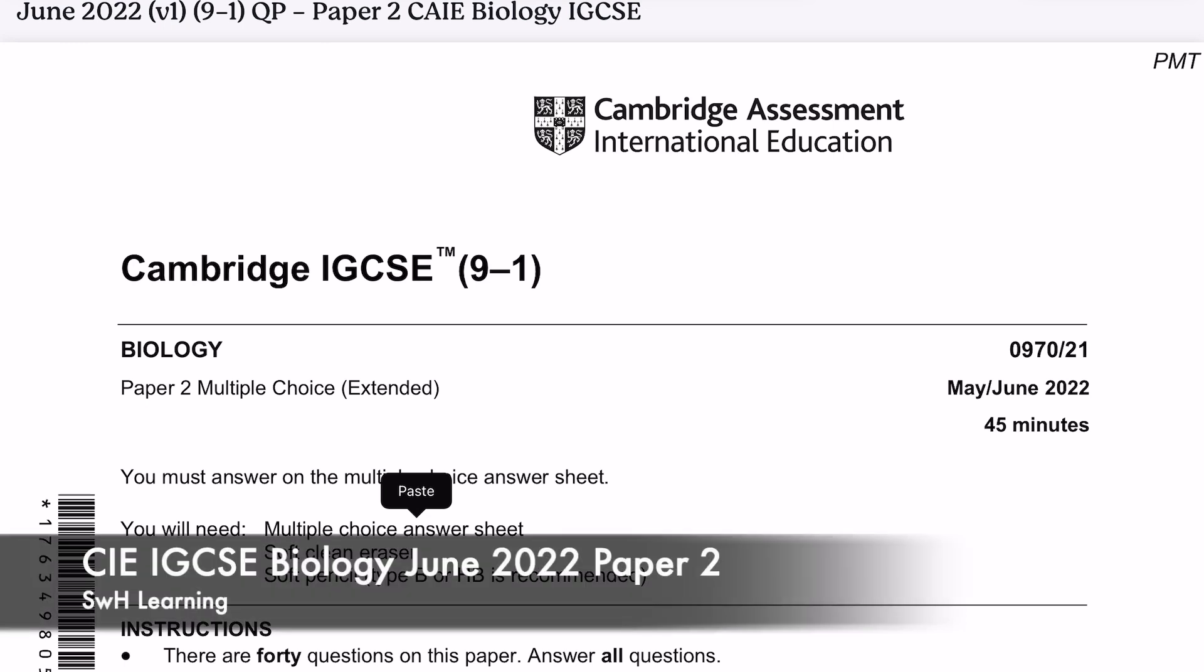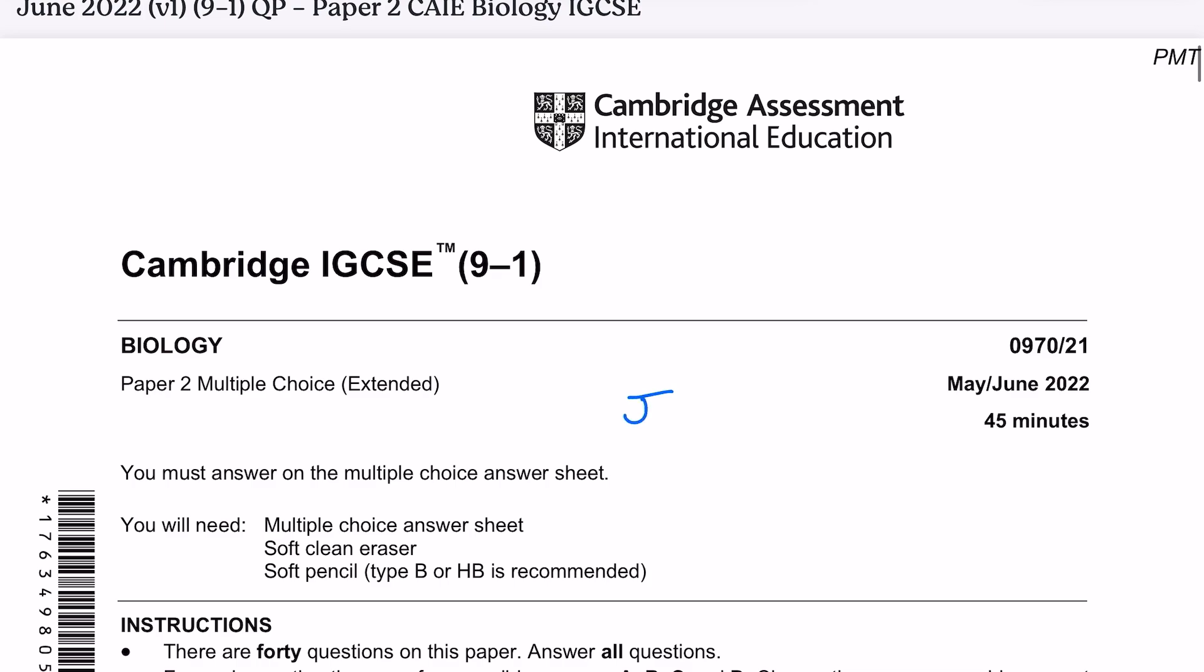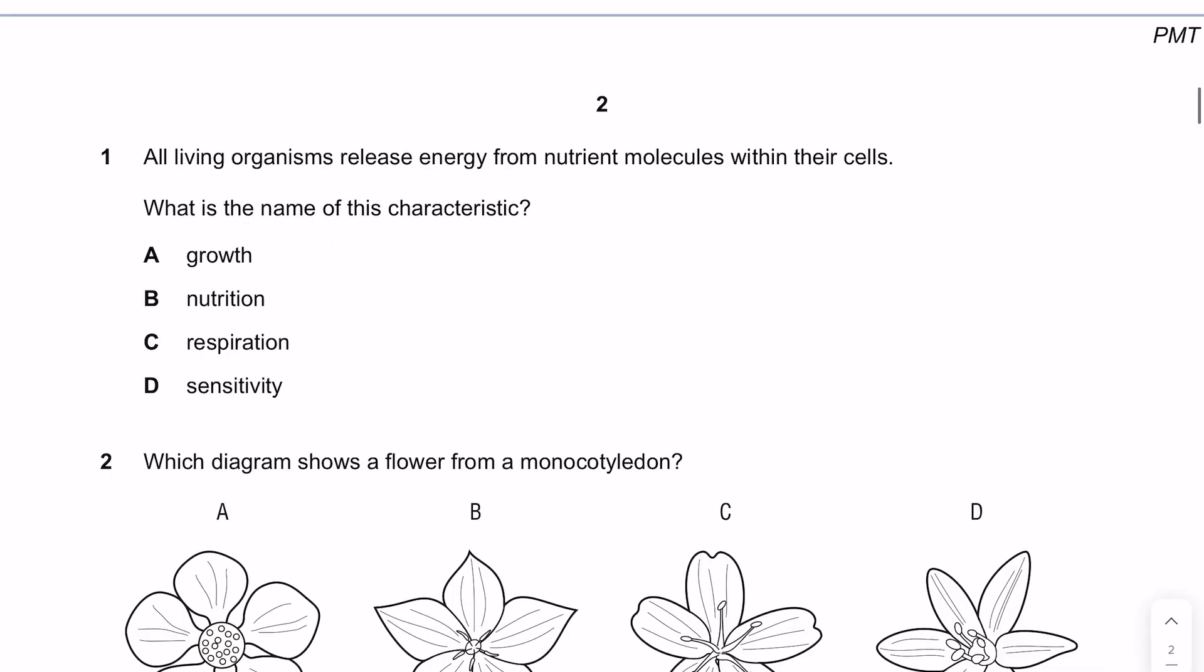This is a Cambridge IGCSE Biology Paper 2 Multiple Choice Extended June 22 Talk 3. All living organisms release energy from nutrient molecules within their cells. What is the name of this characteristic? The release of energy is respiration.